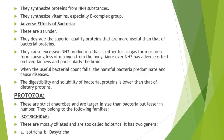In addition to benefits, bacteria also have adverse effects. They can degrade superior quality dietary proteins that are more useful than bacterial proteins. Similarly, bacteria in the rumen can cause excessive ammonia production; this ammonia is either lost in gas form or as urea, causing loss of nitrogen from the body. Moreover, excessively produced ammonia has adverse effects on the liver, kidney and particularly the brain. When useful bacteria count falls, harmful bacteria predominate and can cause disease. The digestibility and solubility of bacterial proteins is also less than that of dietary proteins.